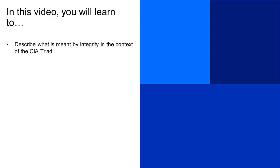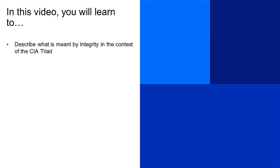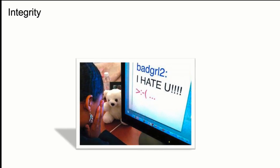In this video, you will learn to describe what is meant by integrity in the context of the CIA triad. The other concept we are going to explore is integrity. Integrity is similar to confidentiality, but there are some differences. Integrity is the principle that all data, all information, all systems we use are not modified, not changed by any system, user, or person in transit or while we are using that system.